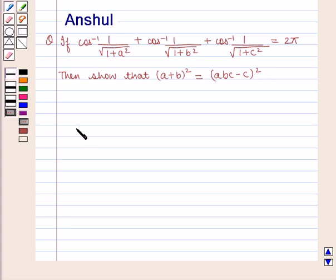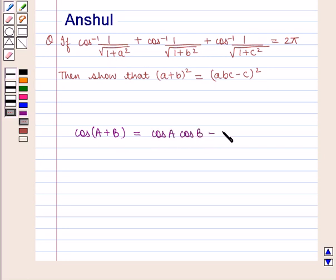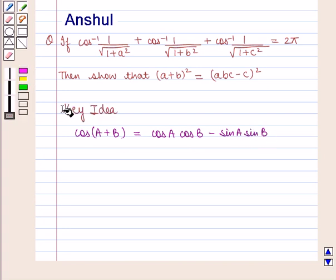The key idea we will use is: cos(A + B) = cos A · cos B − sin A · sin B. With this key idea, let us proceed with the solution.